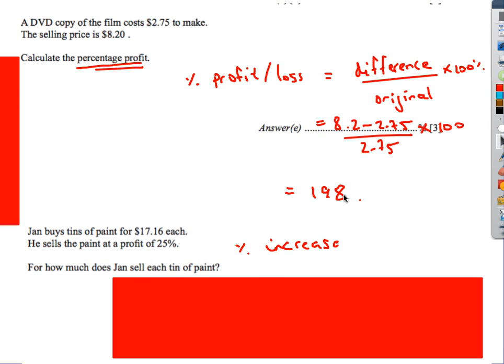You might be thinking, that's a bit strange. Why can we get a percentage greater than 100%? When we're talking about percentage profit, it does make sense. It just means it's more than double the initial price. So 198% is the percentage profit.